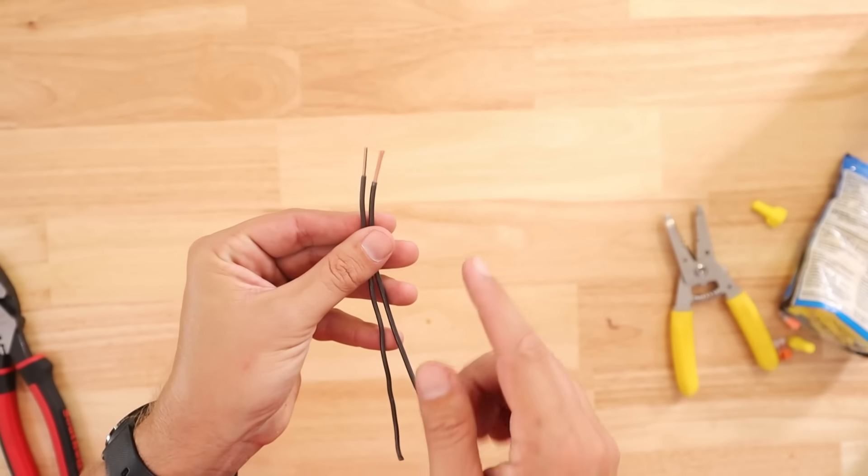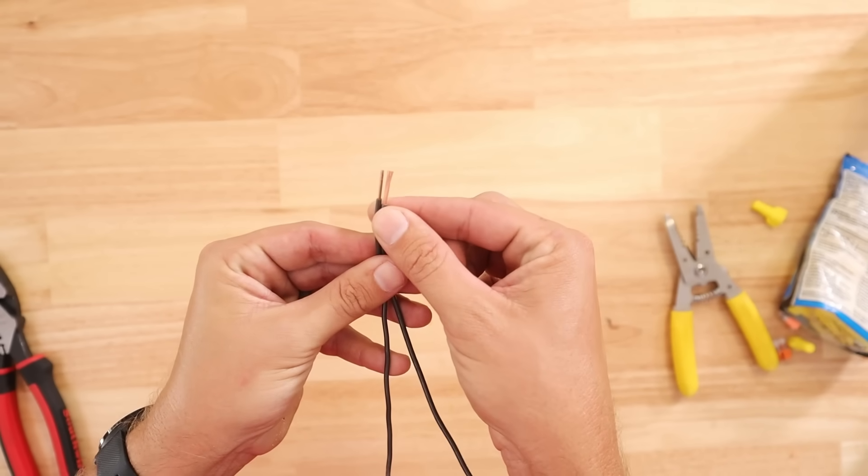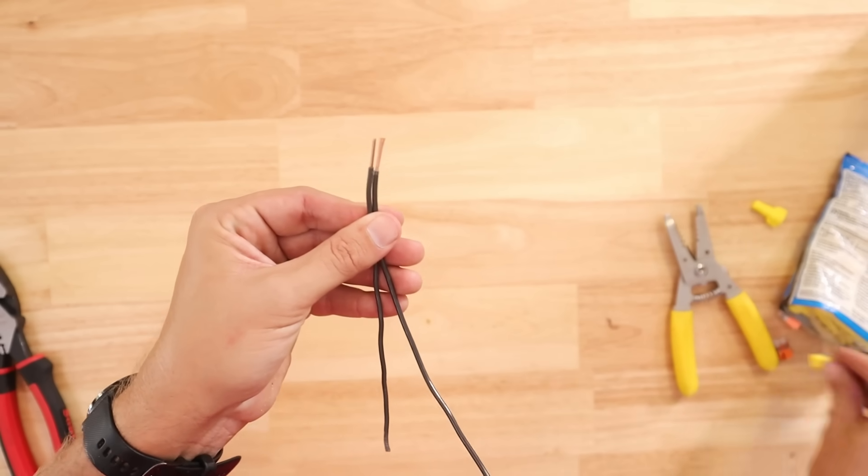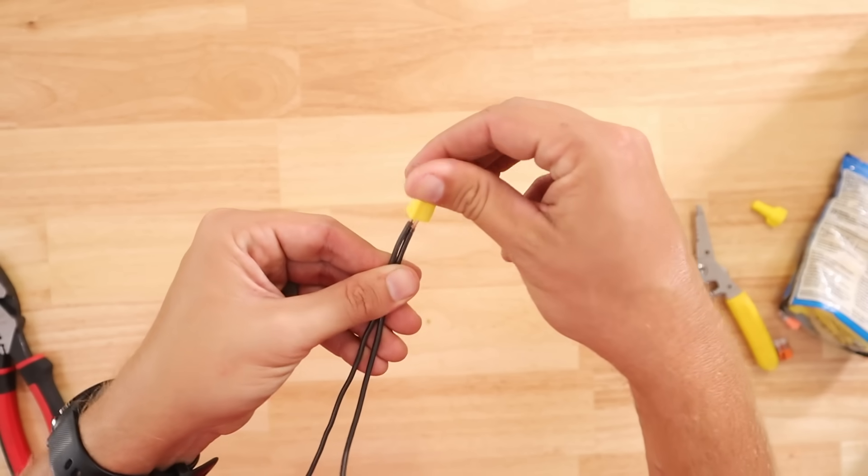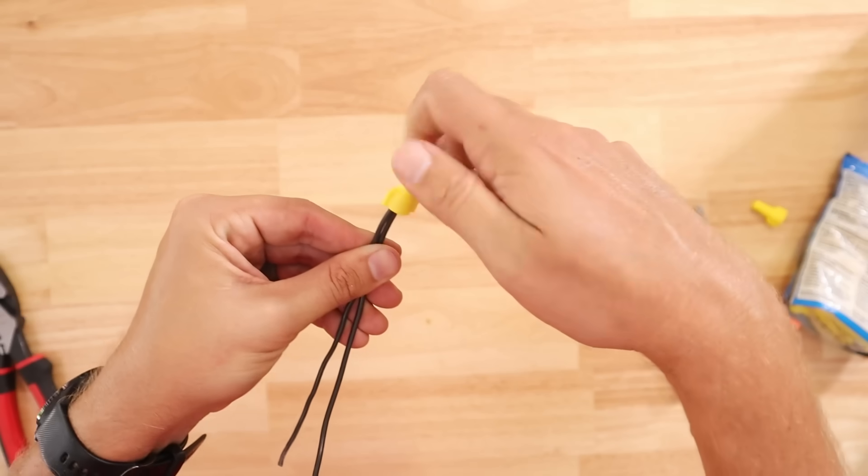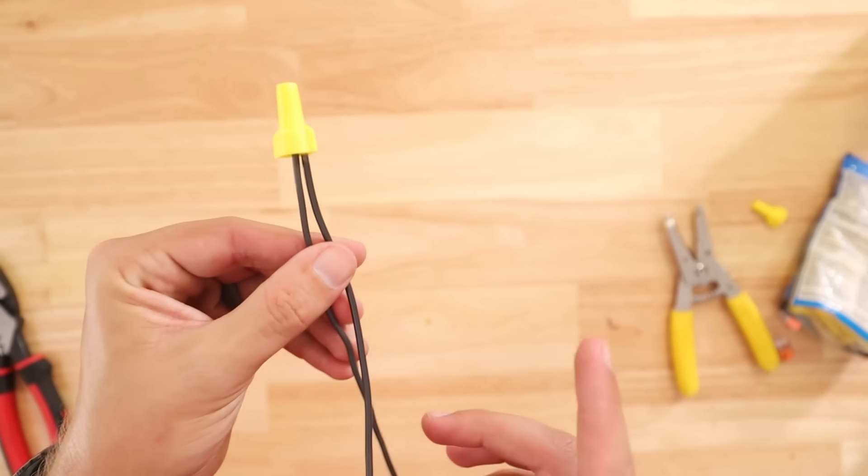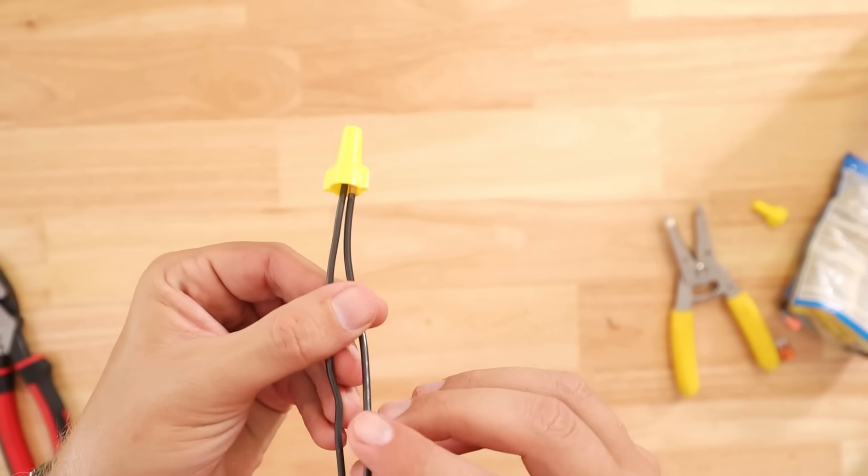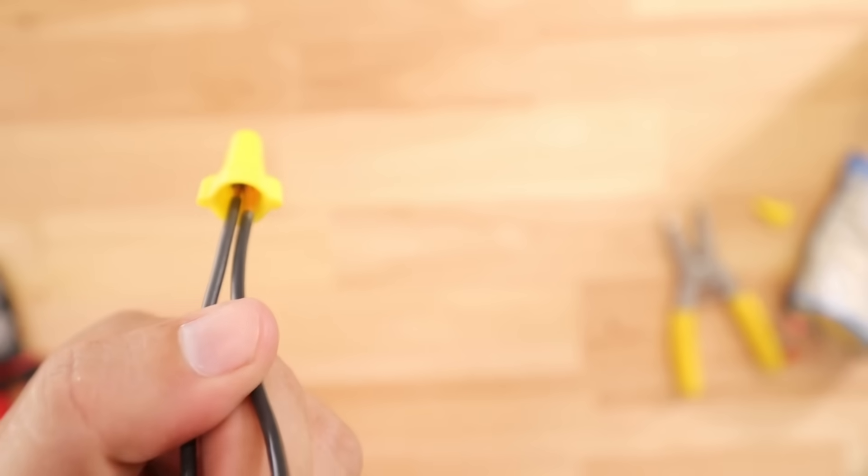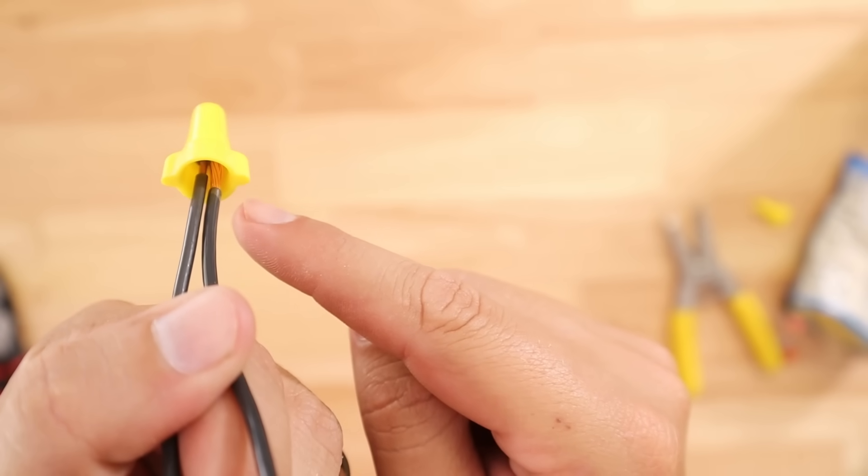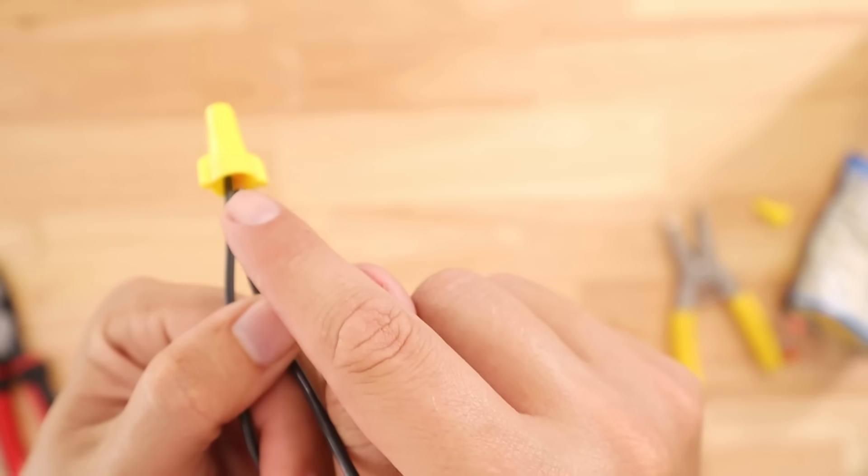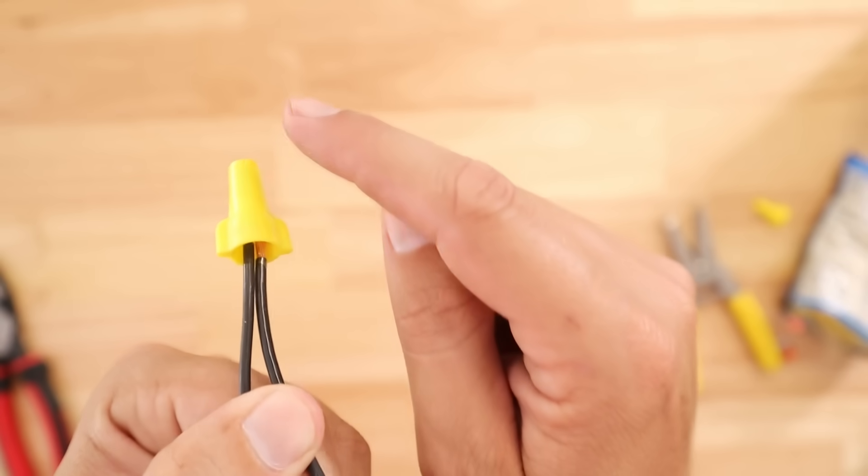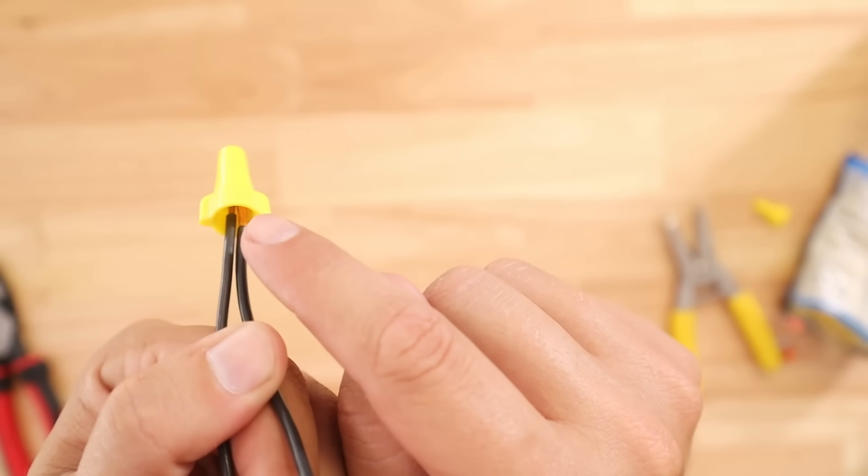Alright so again very similar to the solid core to solid core what people will do is they'll just take their stranded put it up next to their solid core take their wire nut put it underneath of the wire nut and just spin it on. One thing that happens a lot of times when you do it this way and you just put them up next to each other is if you look underneath of this wire nut you can see that the stranded wire actually dropped down from the solid core wire. So we know that the solid core wire is seated higher up in the wire nut than the stranded wire which could point to not having a very good connection.